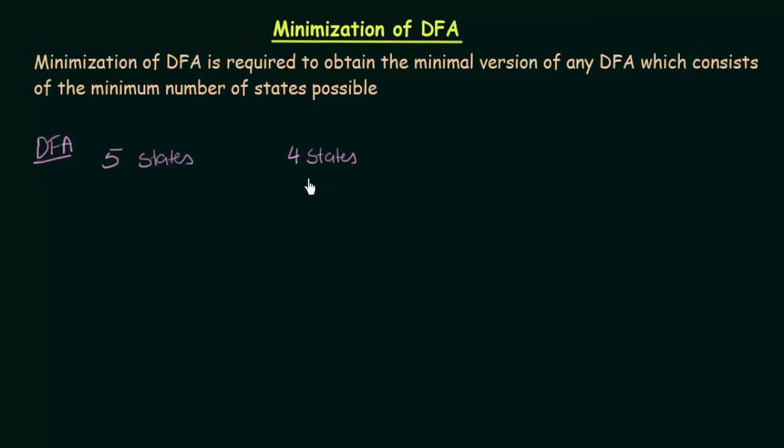Both of them are correct. But here we see that the same DFA can be designed using a lesser number of states. Now, which one do you think is more efficient? 5 states DFA or the 4 states DFA? Obviously, it will be the one with the lesser number of states. So, we want to design the DFA using the minimum number of states possible. That is known as the minimal version of any DFA.